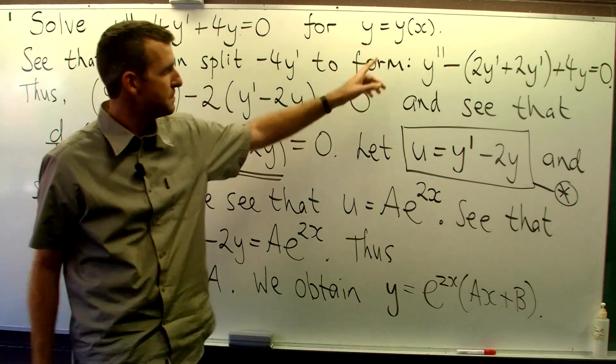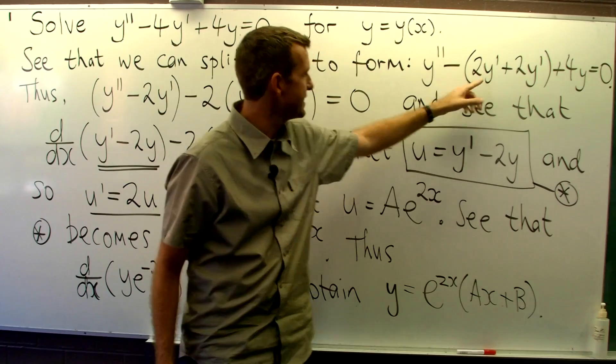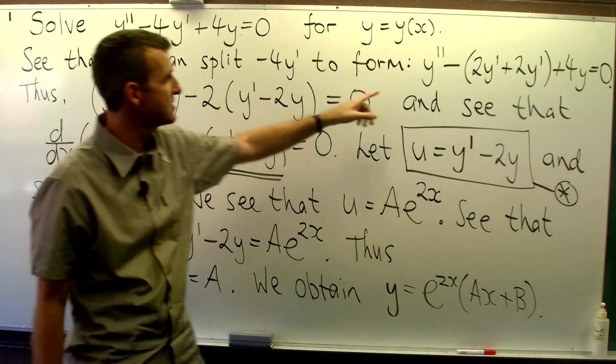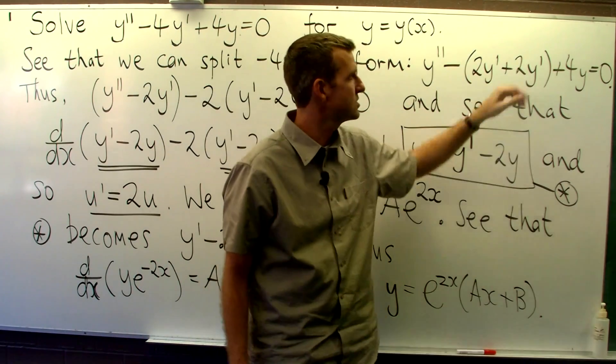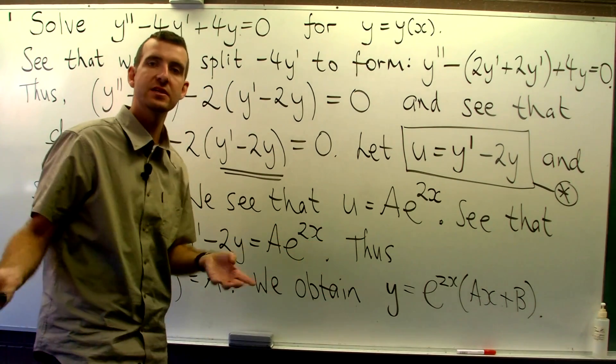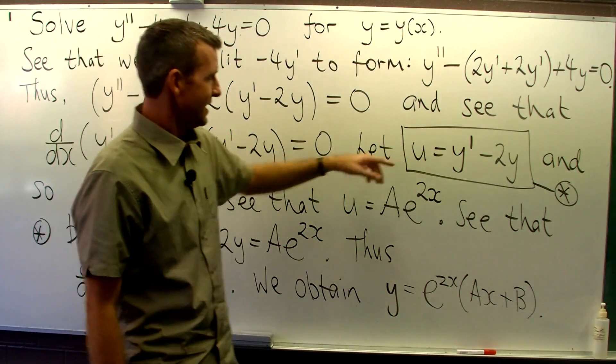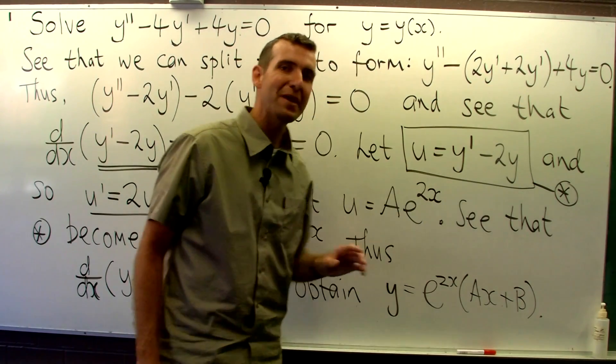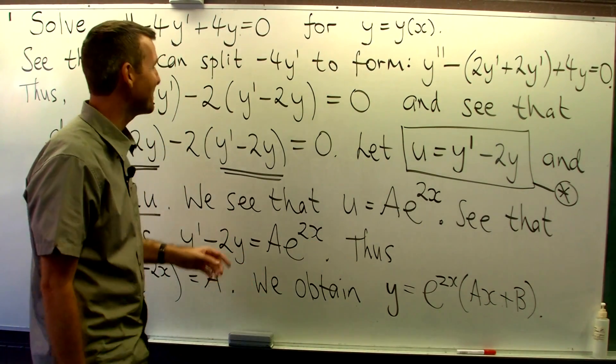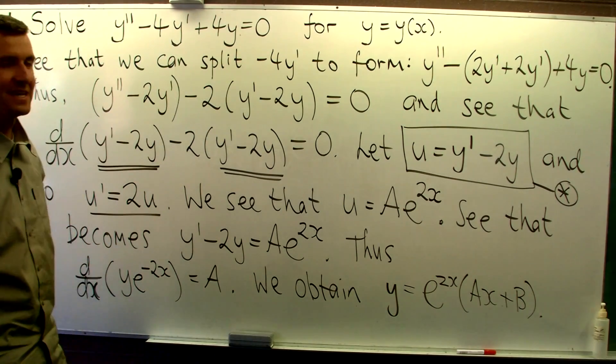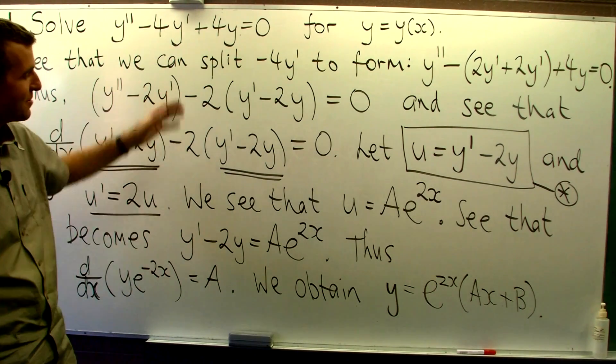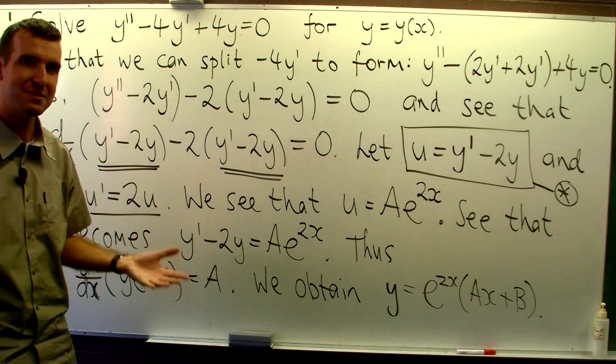So let's go back to how I got this split here. I split the minus 4 up into minus bracket 2 plus 2. Why did I do that? Why didn't I choose 1 and 3 or something like that? Well, the 2 and 2 is the repeated root from the characteristic equation associated with this. So the characteristic equation does play a role here, but it's not explicit.